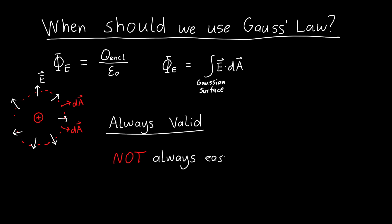That's because the integral E·dA is complicated. Unless the electric field happens to be pointing in the same direction as the Gaussian surface we've chosen, this is not going to be easy. But if it is, our integral transforms into a simple multiplication and life is wonderful.